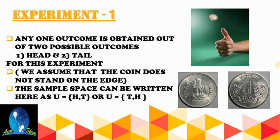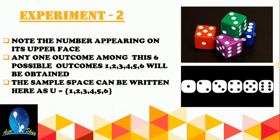Let's do another experiment. Take a dice and roll it, noting the number on its upper face. Any one outcome from 1, 2, 3, 4, 5, 6 will be obtained. The sample space is written as S = {1, 2, 3, 4, 5, 6}. If you throw two dice together, then there will be 36 possible outcomes. You can see the dice images as well.